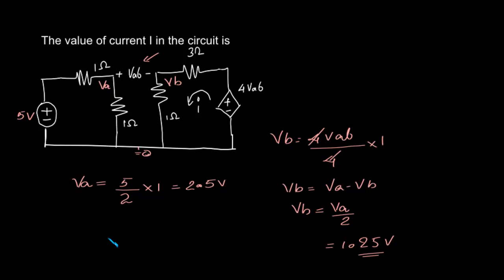Okay, so what is VAB? VAB is VA minus VB, that is 2.5 minus 1.25, which equals 1.25 volts.